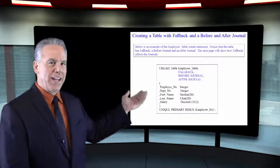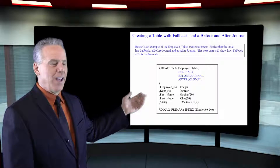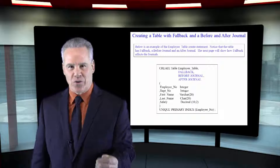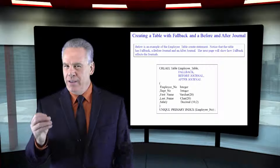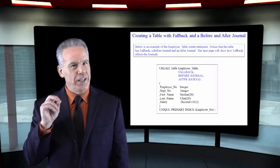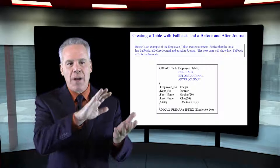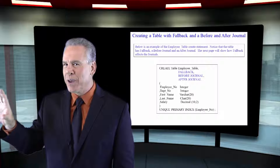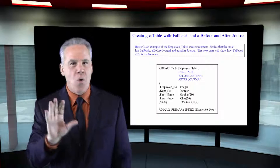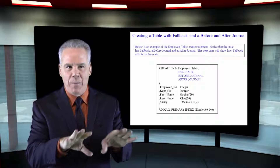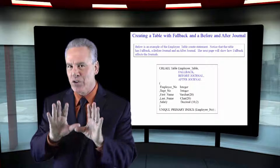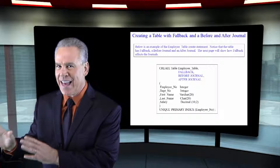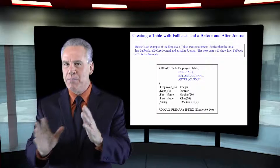In this example, we've created a table with fallback, with a before journal, and an after journal. You can do this. Commonly, you will see a strategy of either: tables fallback protected with not much backup strategy, or no fallback but using an after journal and full system backup concept to protect that data. You don't always see them both.